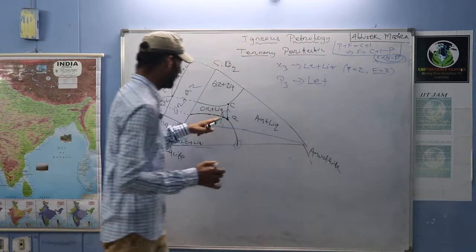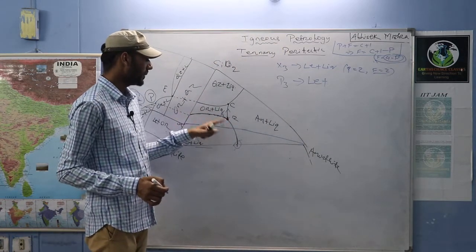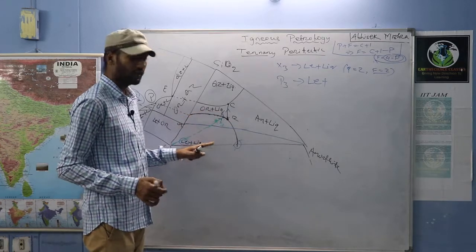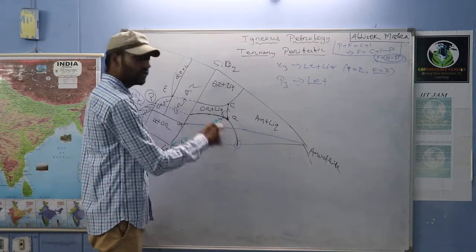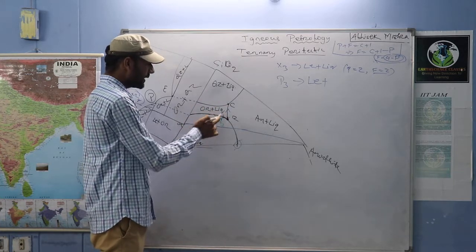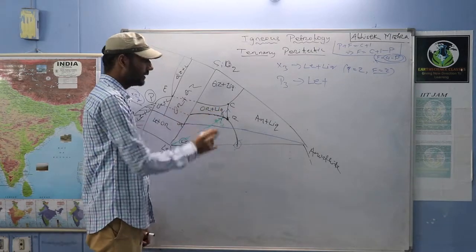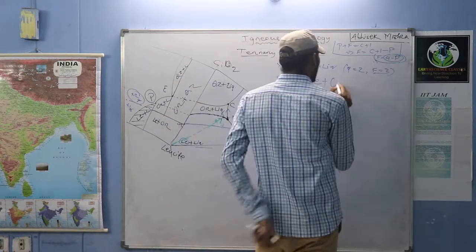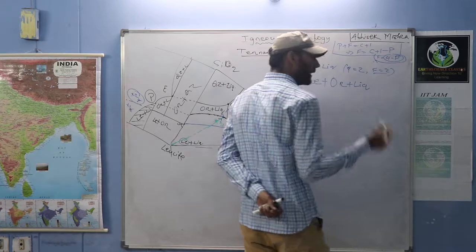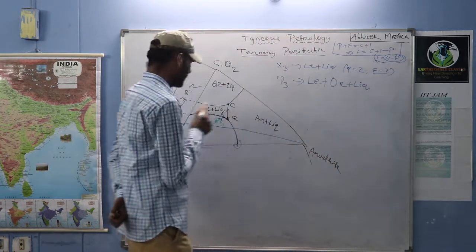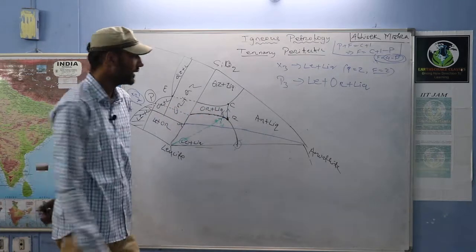From X3 to P3: leucite plus liquid. At P3, which is on the boundary between orthoclase field and leucite field, we get leucite plus orthoclase plus liquid. P3 is on the reaction curve — the extension of the peritectic point — and orthoclase forms in two ways: directly from magma, and from leucite plus liquid reacting with silica.